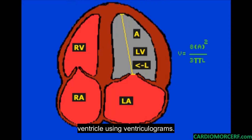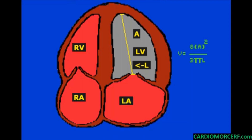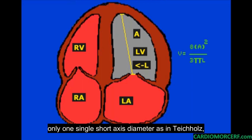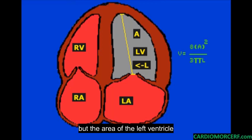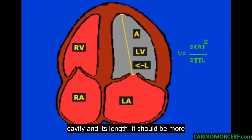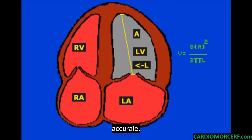Using ventriculograms, it measures the area of the left ventricle and its length. It stands to reason that if you use not only one single short axis diameter, as in Teicholz, but the area of the left ventricle cavity and its length, it should be more accurate.